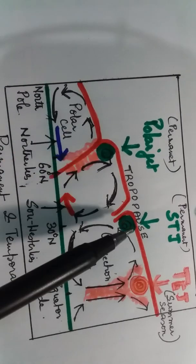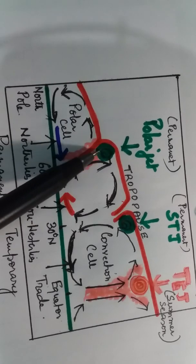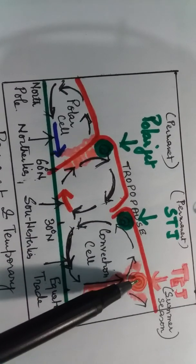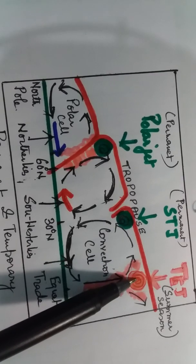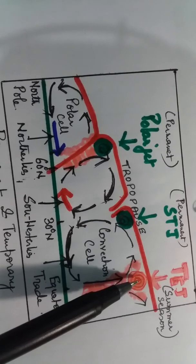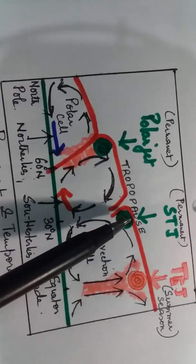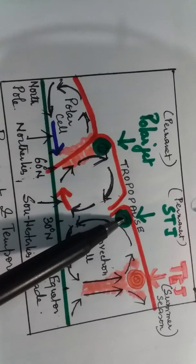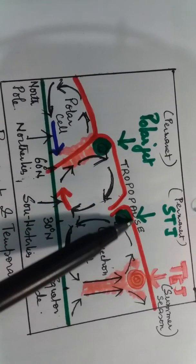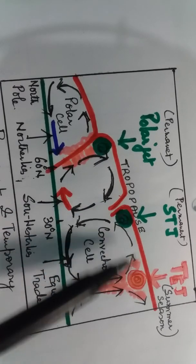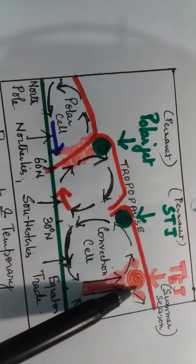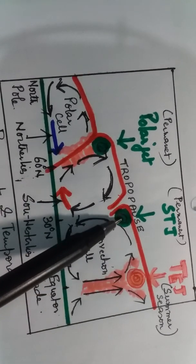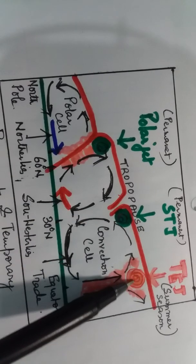You can see the position of the jet streams: the polar jet and the subtropical jet form at these zones of convergence, and the tropical easterly jet stream is also present. While referring to the climate of India, I will refer to the subtropical jet stream — also called the westerly jet stream — which blows from west to east and is very active in winter. The tropical easterly jet stream becomes active during the summer season.